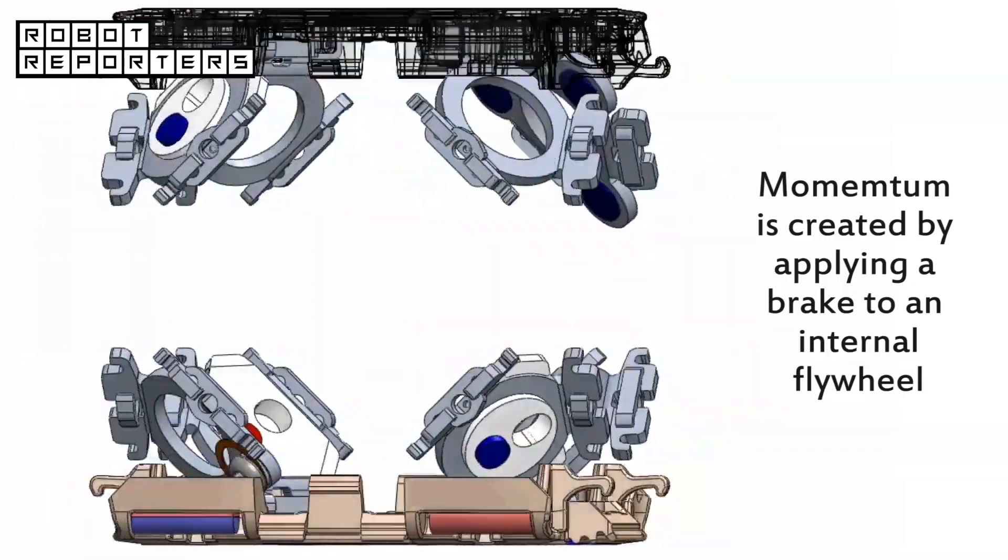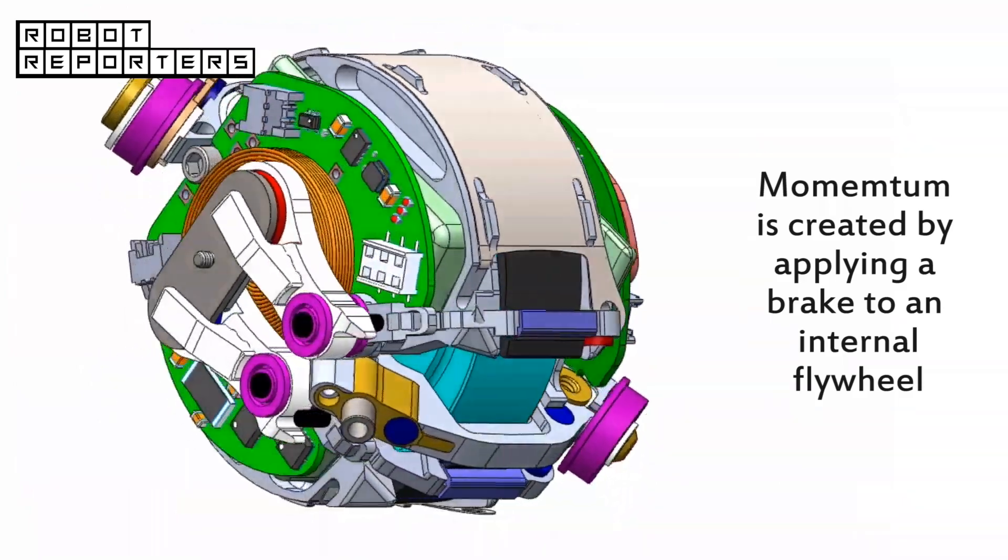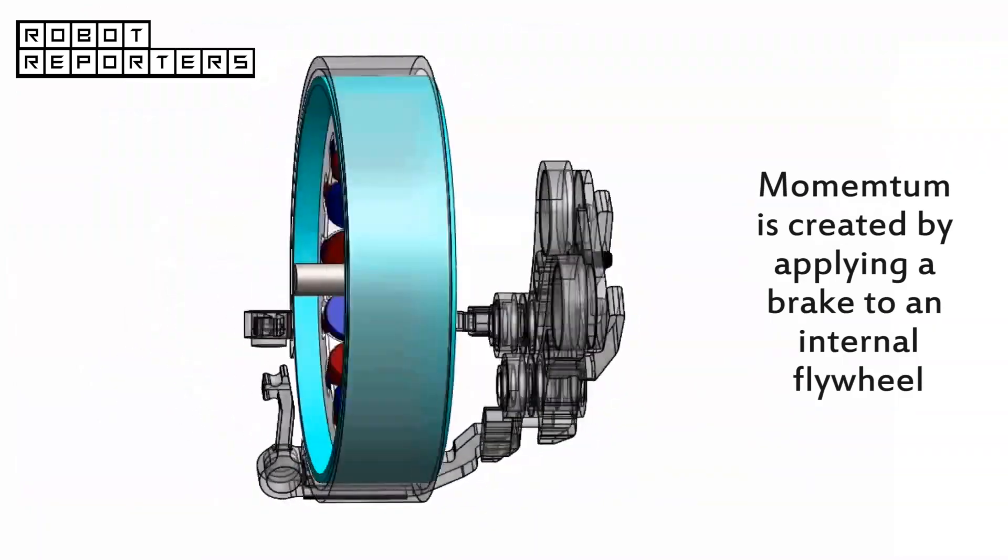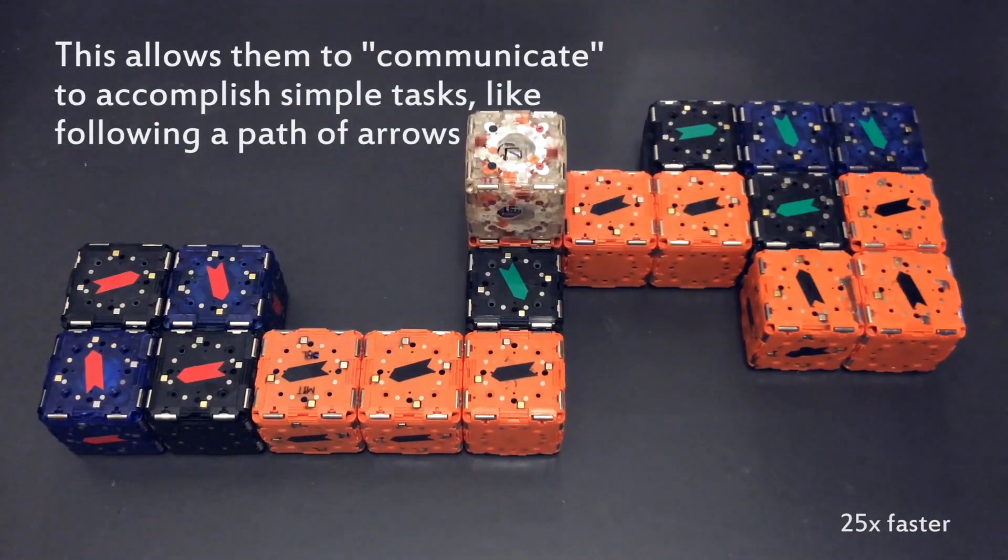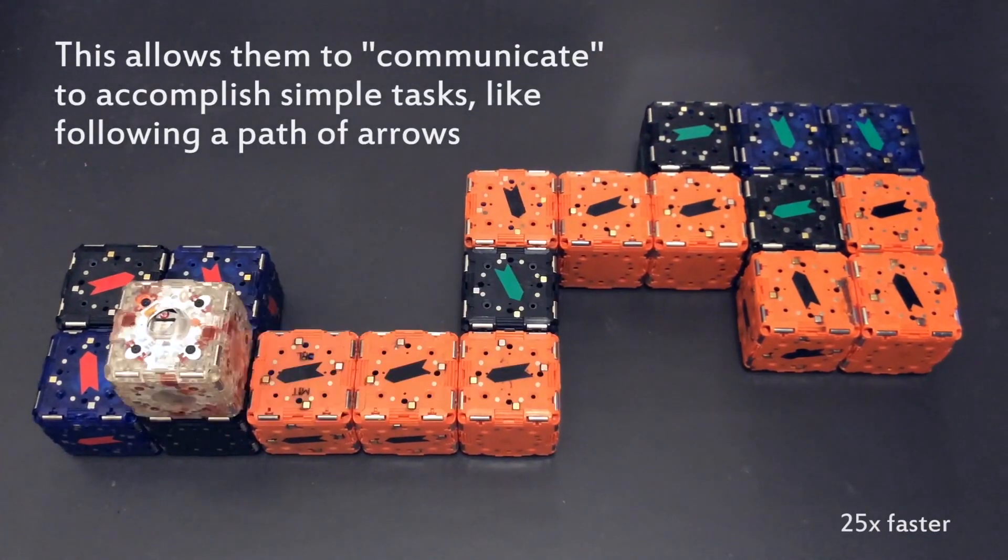M-blocks' internal structure allows them to move on their own. Six years after the project's first iteration, the robots can now communicate with each other.